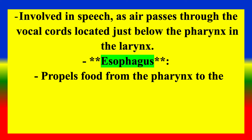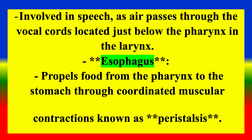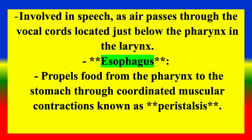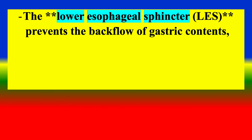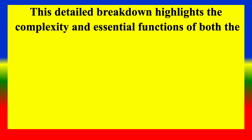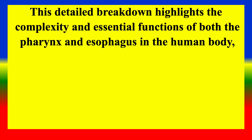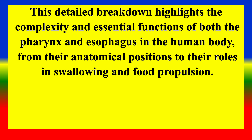Functions — Esophagus: The esophagus propels food from the pharynx to the stomach through coordinated muscular contraction known as peristalsis. The lower esophageal sphincter prevents the backflow of gastric contents, protecting the esophagus from acid reflux. This detailed breakdown highlights the complexity and essential functions of both the pharynx and esophagus in the human body, from their anatomical positions to their roles in swallowing and food transport.